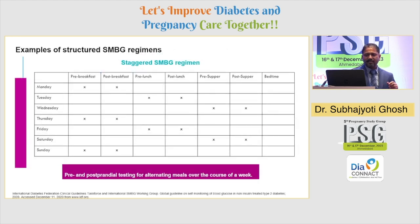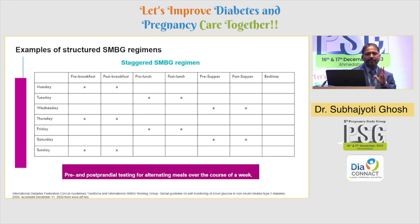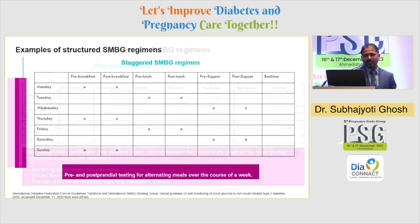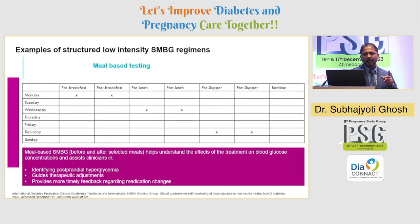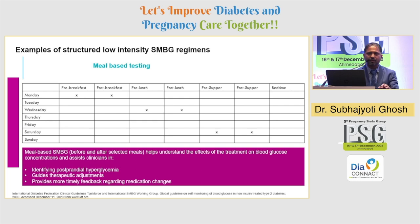This is about staggered SMBG. Staggered SMBG is where we try to do pre and post meal readings every alternate day in a different part — one day you do breakfast, one day lunch, one day supper — continuing until we understand the actual pattern. Along with that, meal-based testing is important because doing SMBG alone will not support us if you don't also review the food diary of our patients.